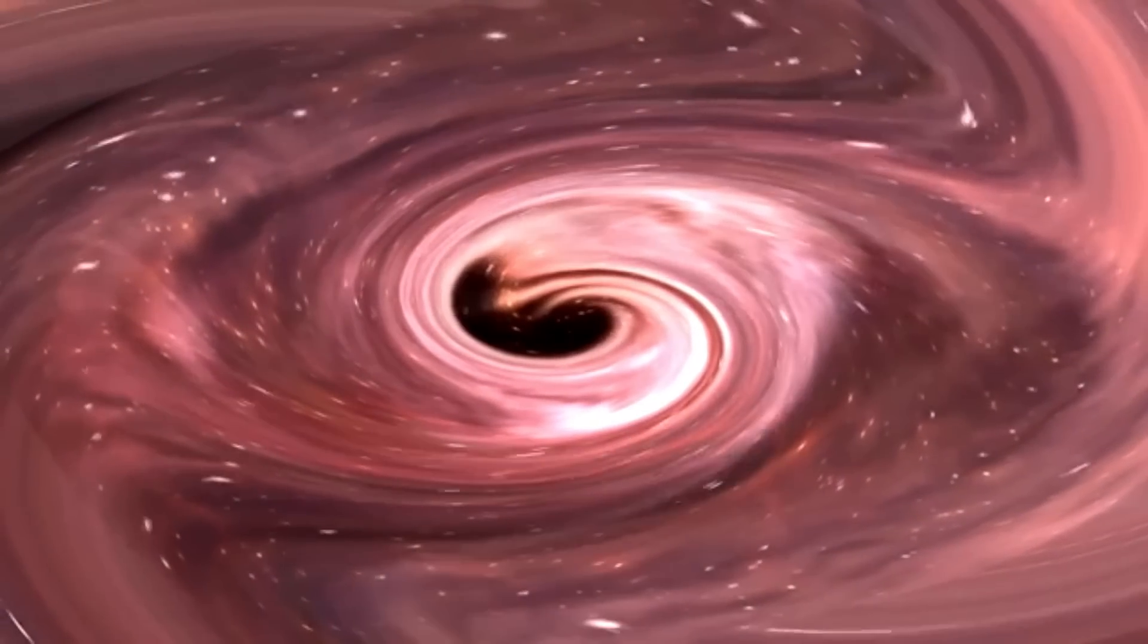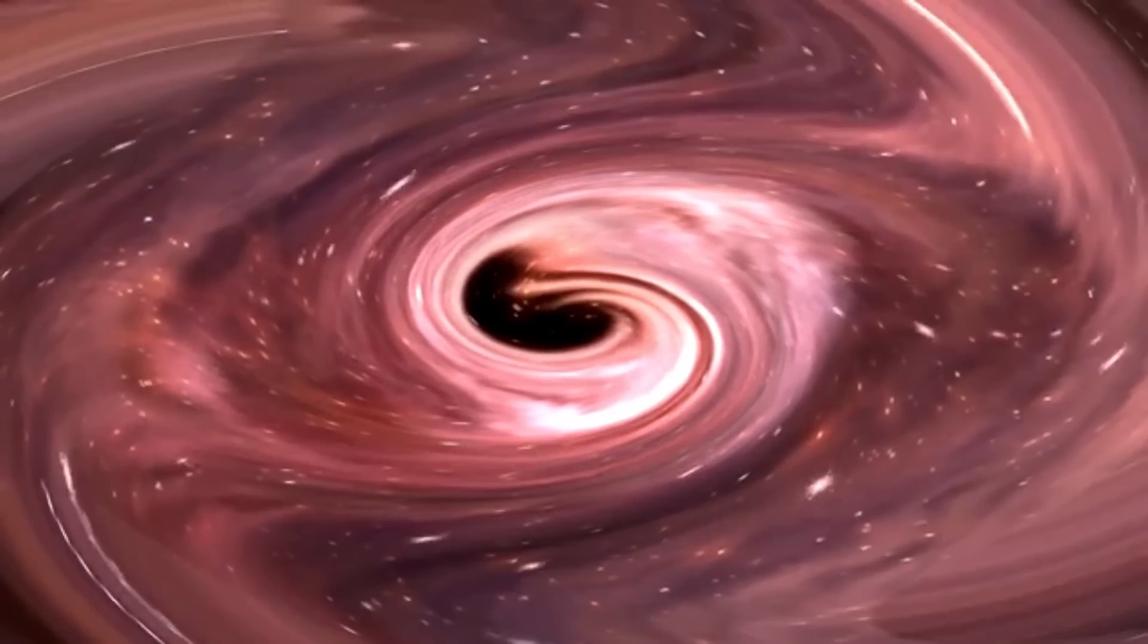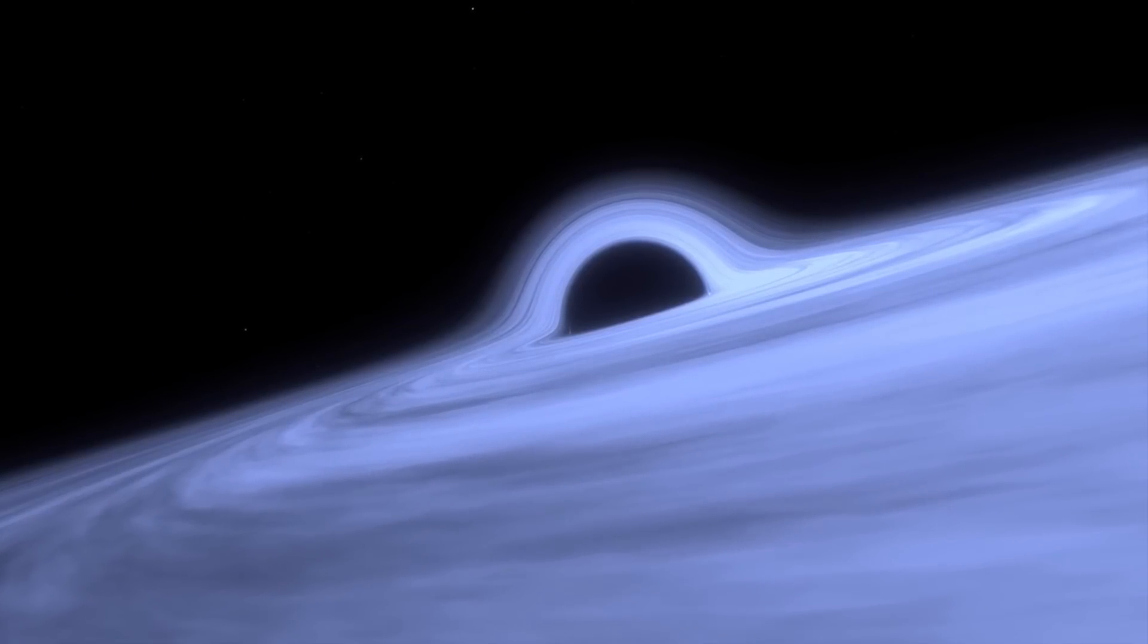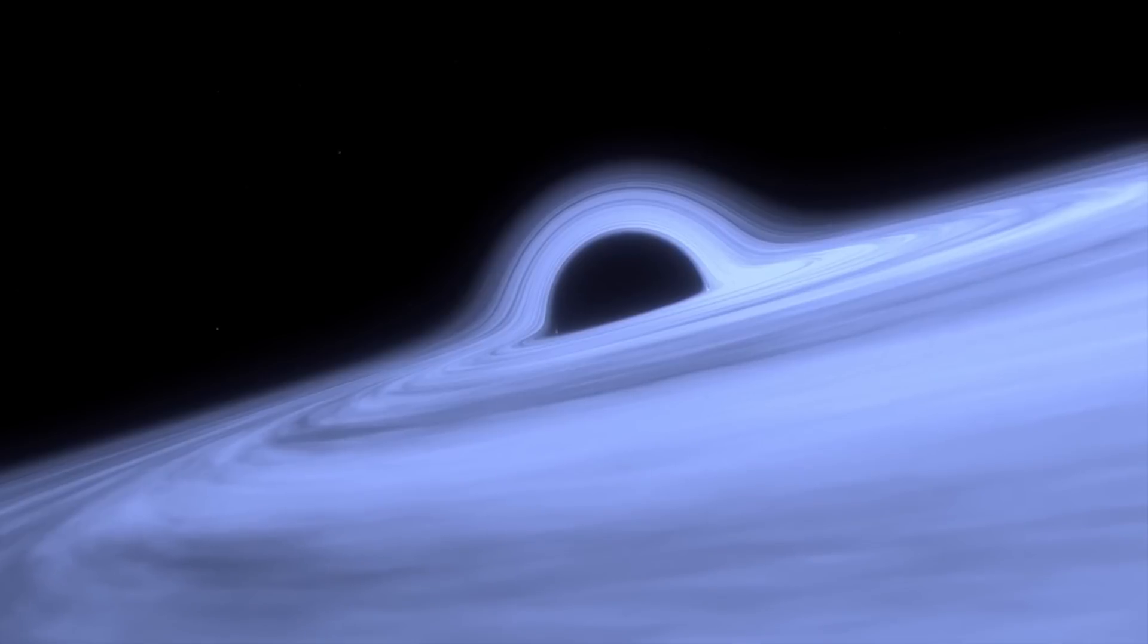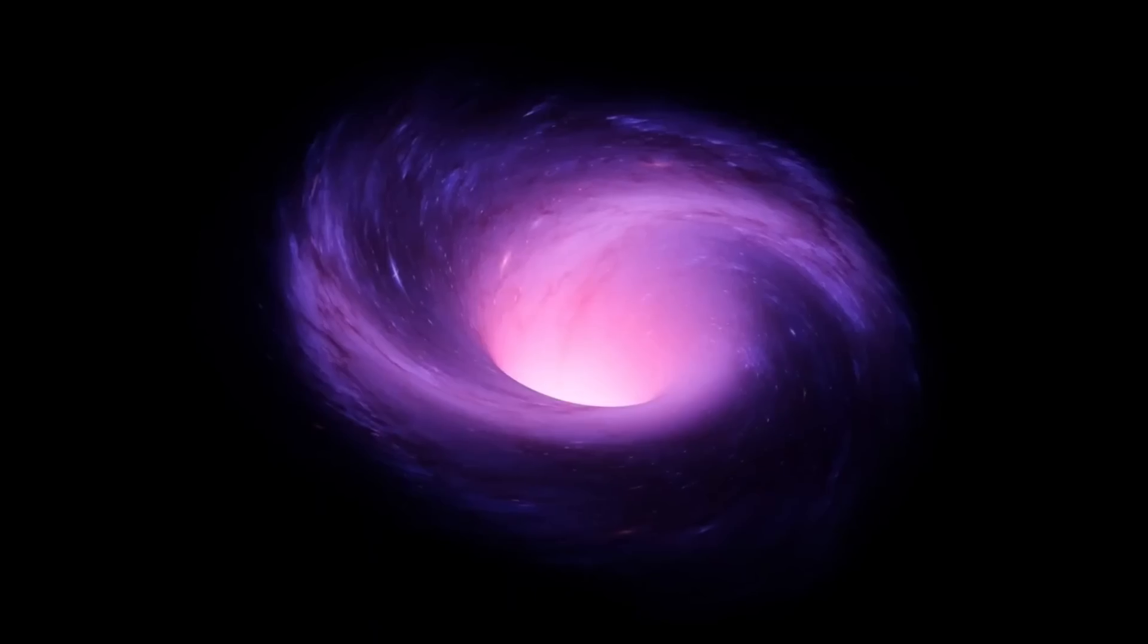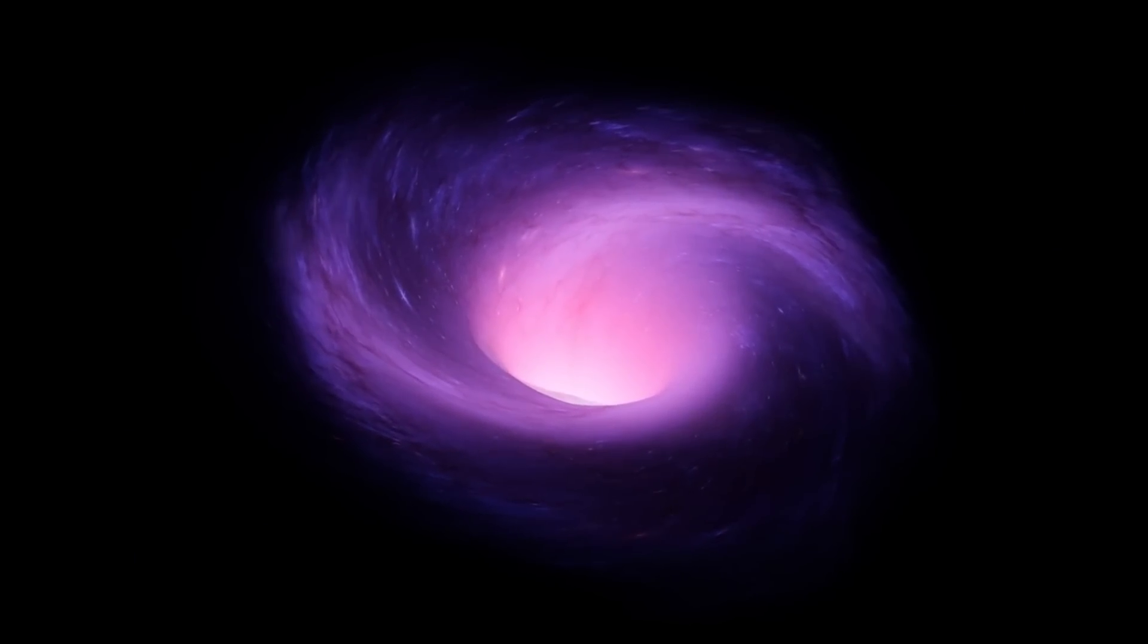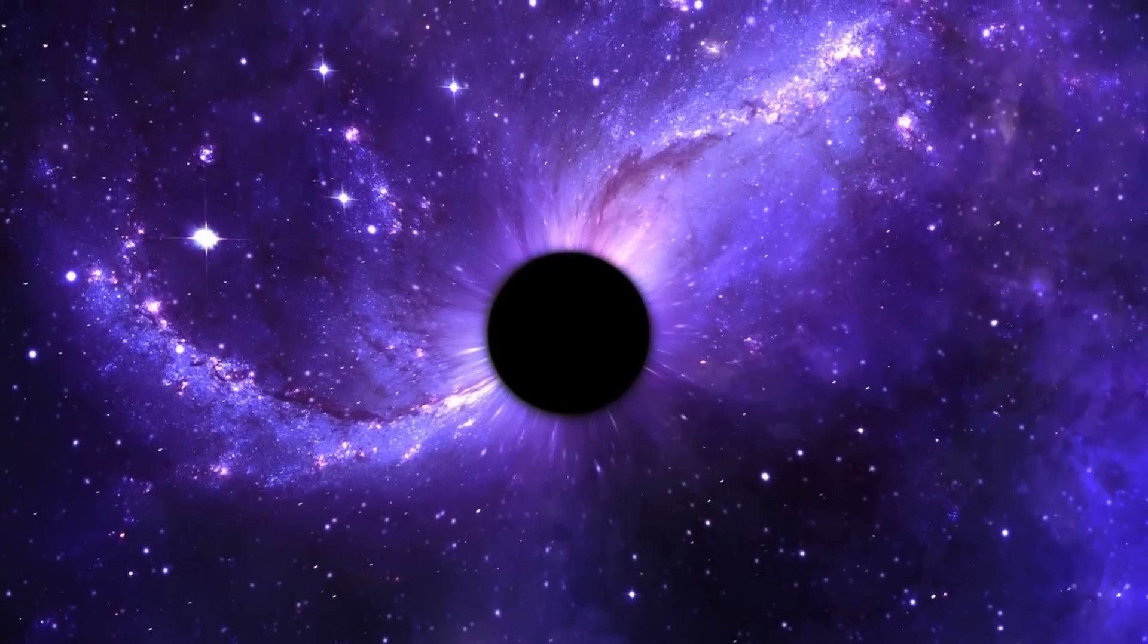As these mighty stars collapse, something strange occurs near their surfaces. Time itself starts to play tricks. From the perspective of someone far away, time appears to slow down near the event horizon, the point of no return for anything falling into a black hole. It's like the star's clock ticks at a different pace compared to ours.